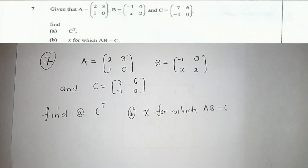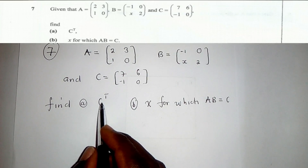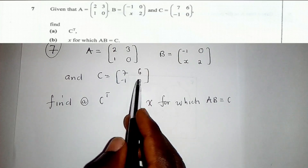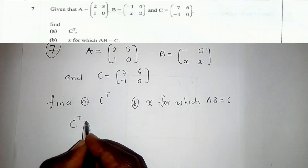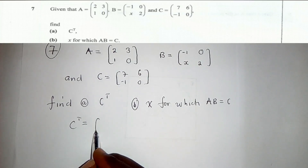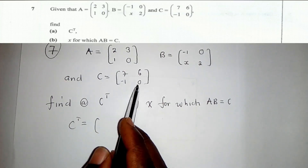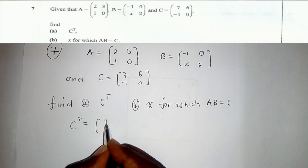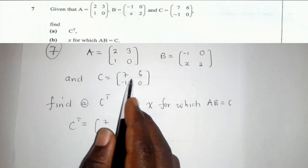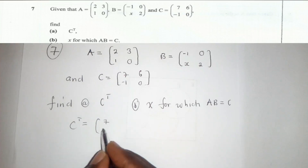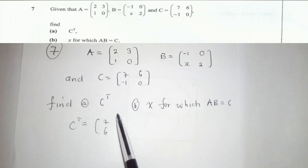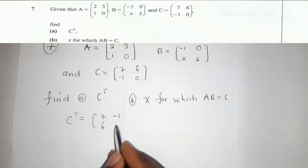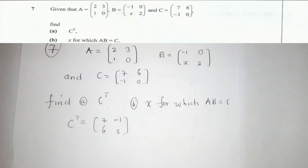For Question 7a, we need to find C transpose. We check our matrix C and switch the rows to become columns. The first row has 7 and 6, so 7 and 6 move down to become the first column. The second row has negative 1 and 0, so those also move accordingly. This is the solution for the transpose.